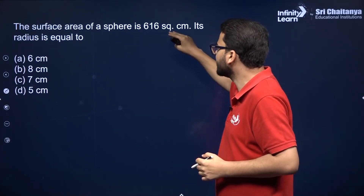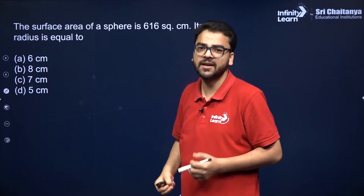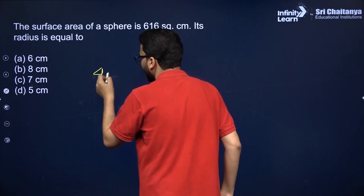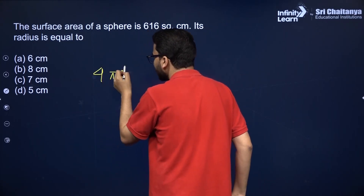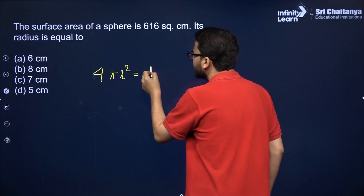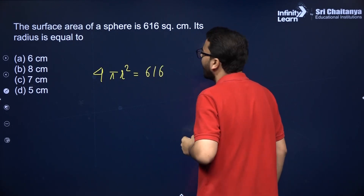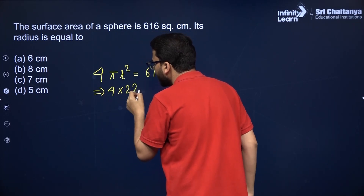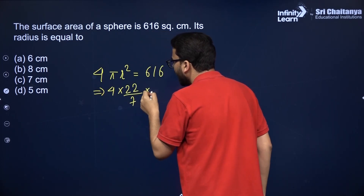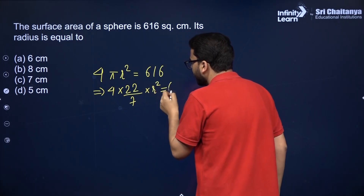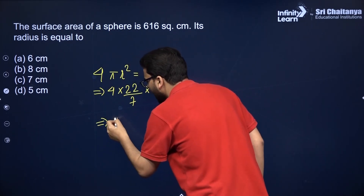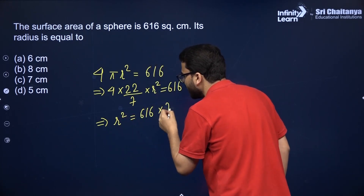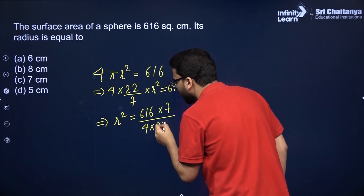The surface area of a sphere is 616 cm². You have to find its radius. The formula for the surface area of a sphere is 4πR². Let us assume the radius to be R. So 4 × (22/7) × R² = 616. Therefore R² = 616 × 7 divided by 4 × 22.